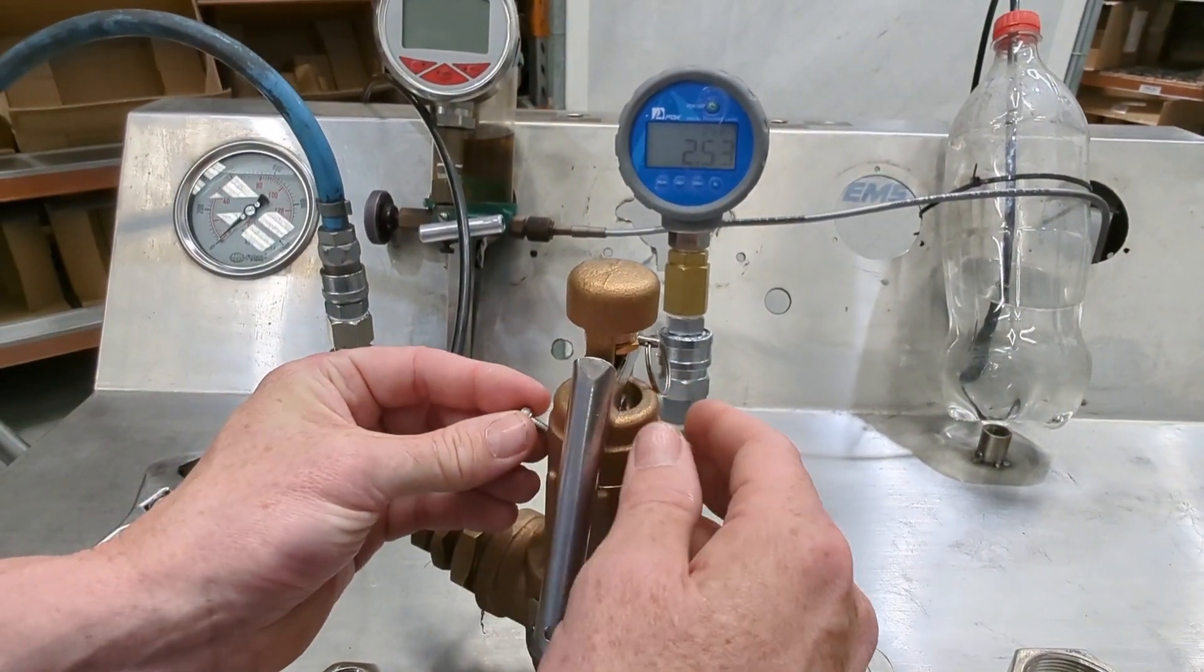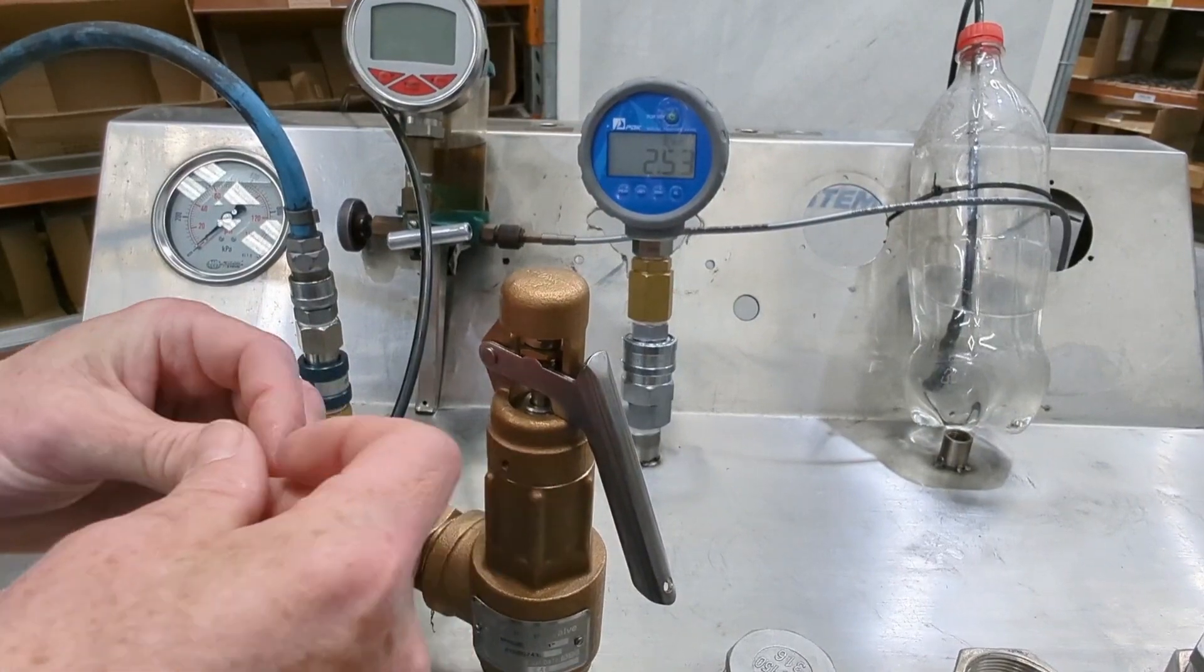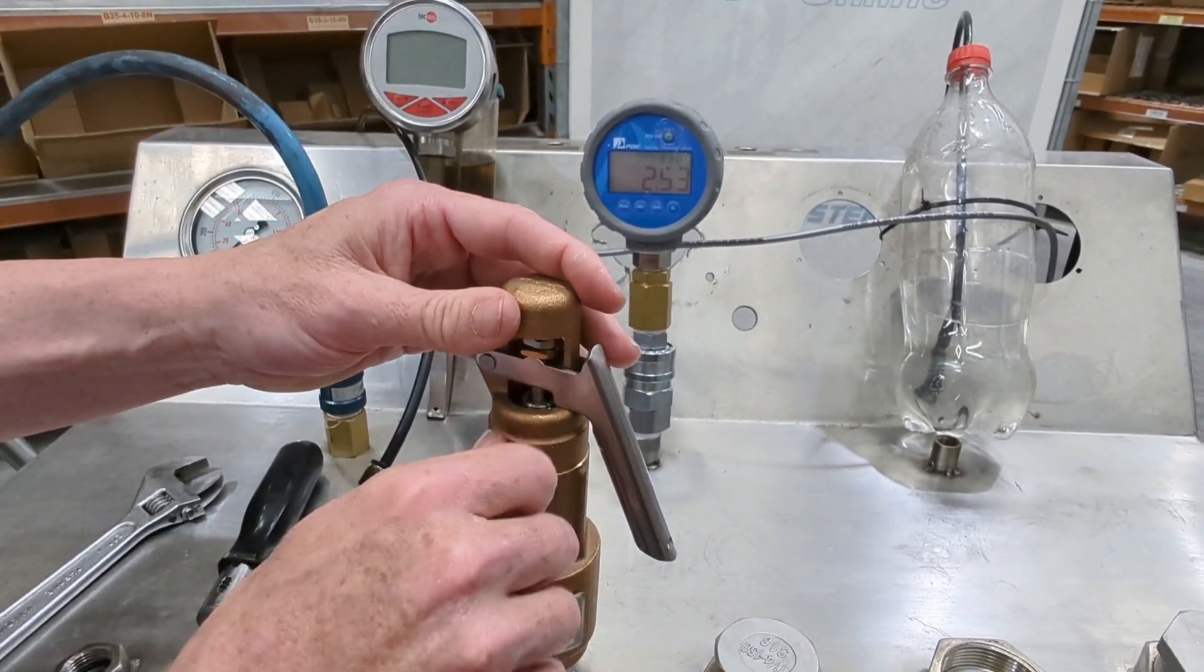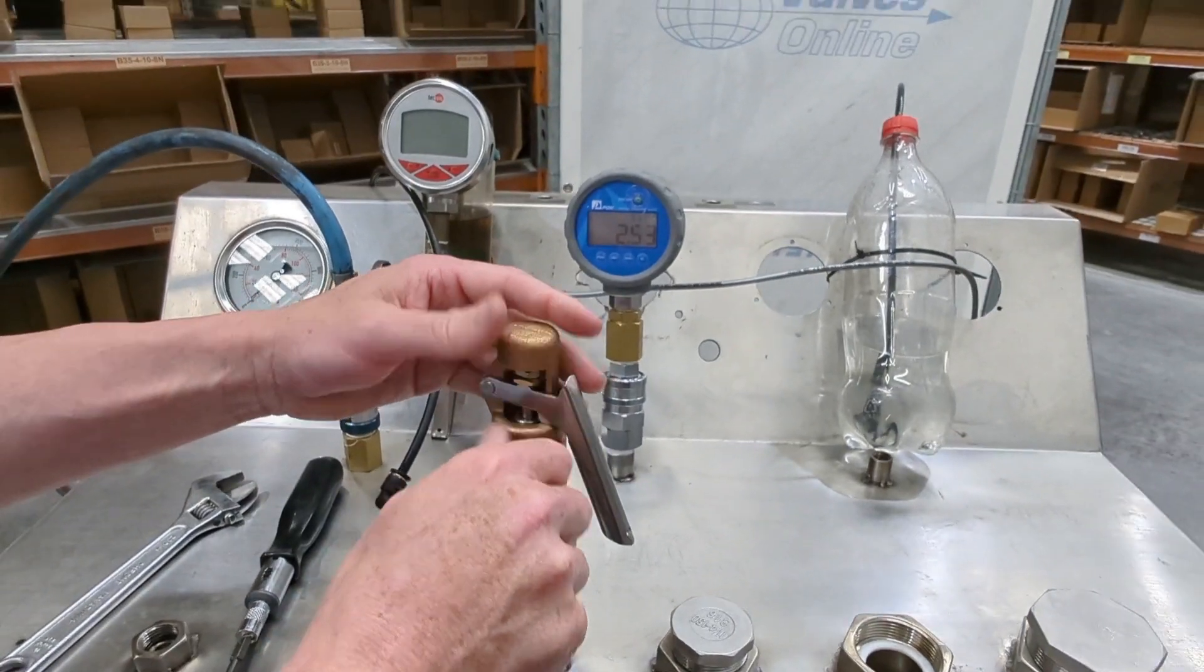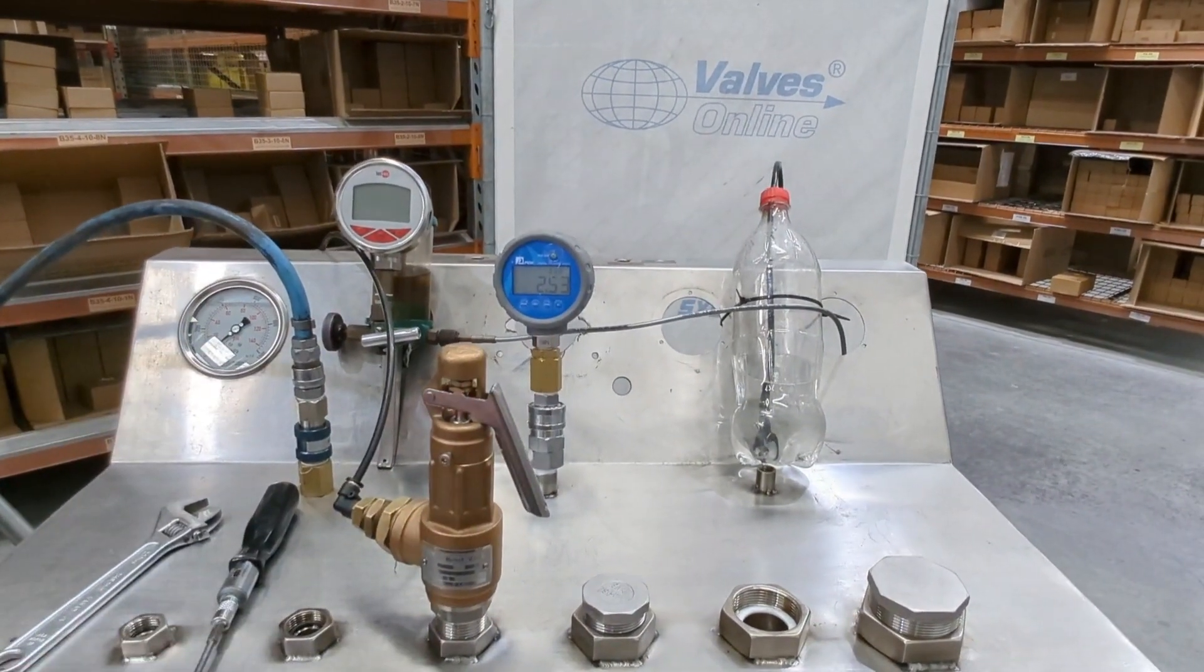Once you've done that, you want to record your set pressure on the front of the plate and install it in line.